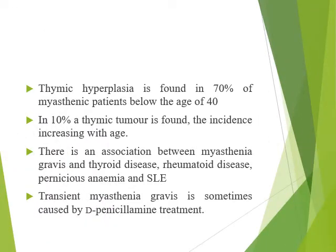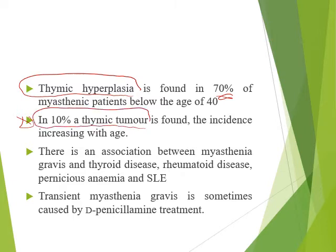In myasthenia gravis, about 70% of patients have thymic hyperplasia. It is believed that this thymic hyperplasia produces IgG antibodies that attack the post-synaptic acetylcholine receptors — at first blocking them, later destroying them and causing flattening of the post-synaptic membrane. This is usually present in patients below 40 years of age. About 10% of patients have thymic tumor (thymoma) rather than thymic hyperplasia, and one-third of these thymomas are malignant. There is also an association between myasthenia gravis and other autoimmune diseases like thyroid disease, rheumatoid disease, pernicious anemia, and SLE.